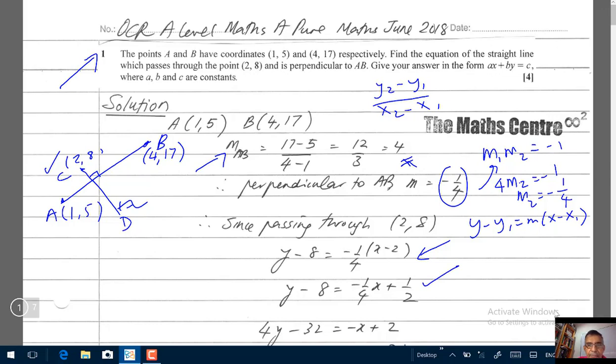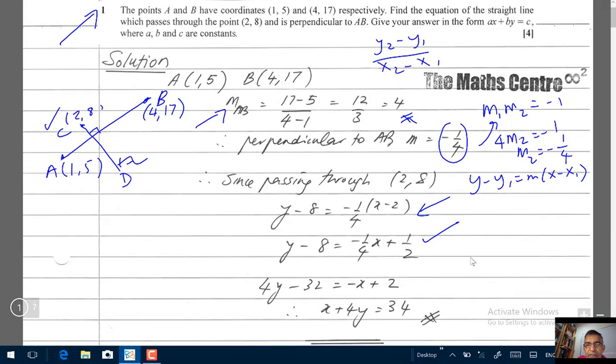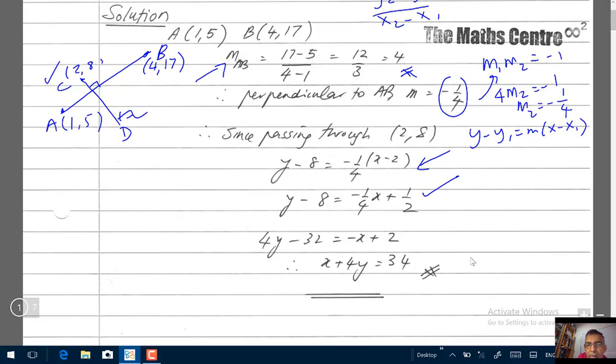And multiplying throughout by 4, you'll get 4Y minus 32 equals to minus X plus 2. Clean it up so that you can write it in the way they want it. They want it in the form AX plus BY equals to C. Therefore, X plus 4Y equals to 34, bringing the 32 to this side. And we are done.